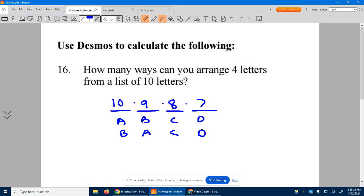So all we have to do is multiply these numbers. And I just calculated it. I got 5,040. There are 5,040 different ways to arrange four letters from a set of 10.